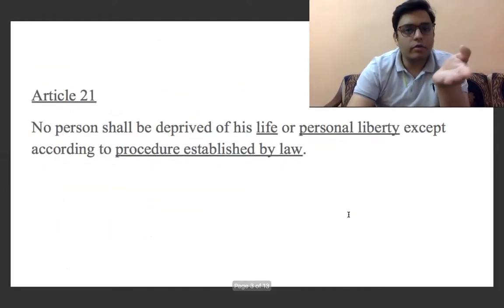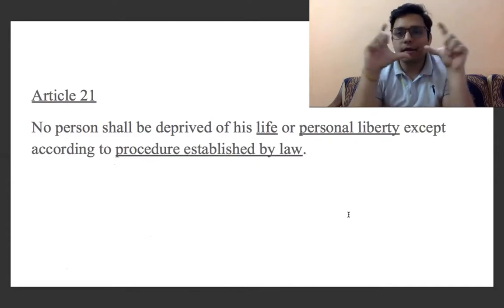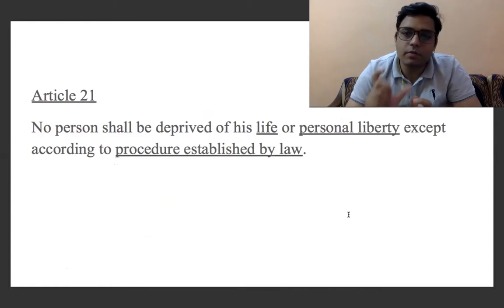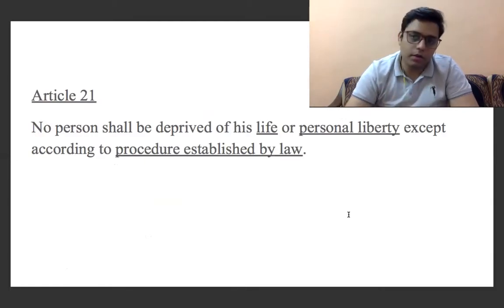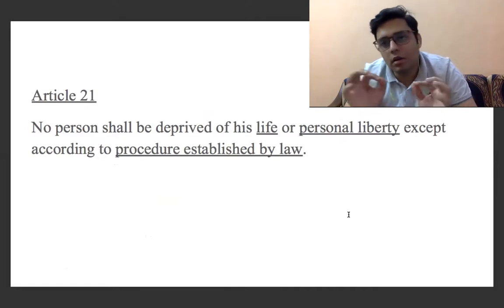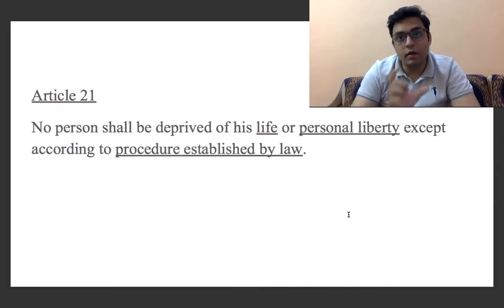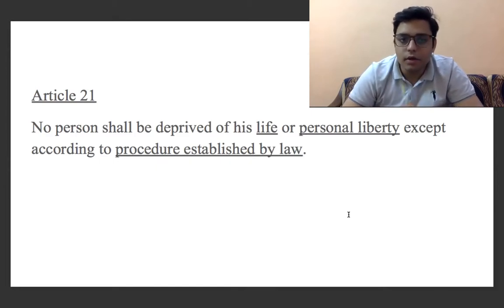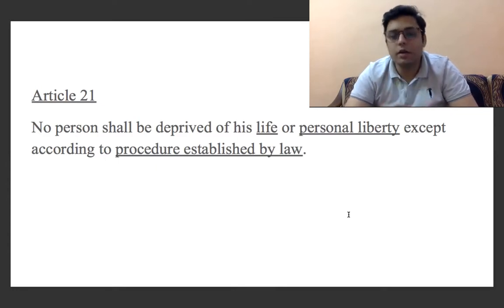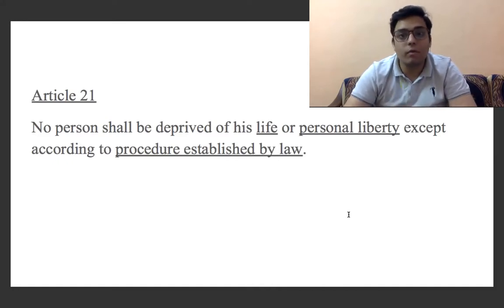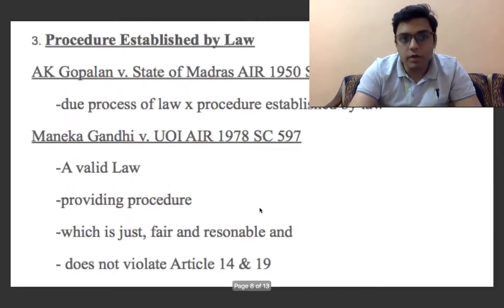The third term — let's go back to Article 21 — the last part says 'except according to procedure established by law.' So what is meant by this key phrase? You can deprive a particular person's life or personal liberty by a law which has followed a procedure established by law. This is a very powerful weapon in the hands of the state, so it is very necessary to interpret and understand its broadness.